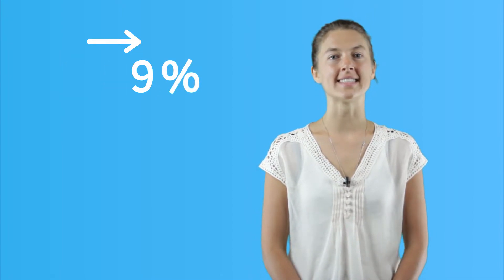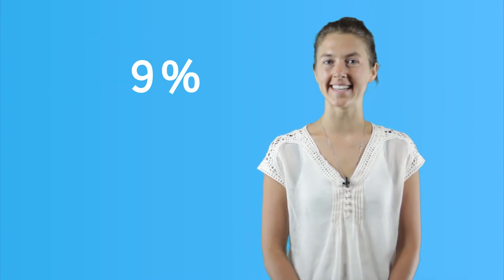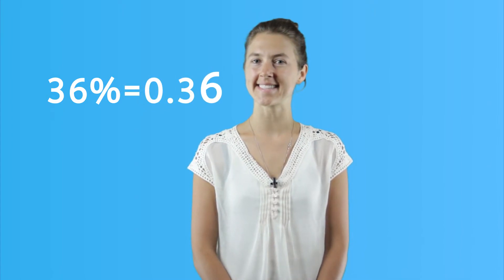We can write percents as decimals just as easily. How would we change 36 percent into a decimal? Since we know that the hundredths place is the second place value after the decimal, we make sure to end the 36 in the hundredths place, like this.